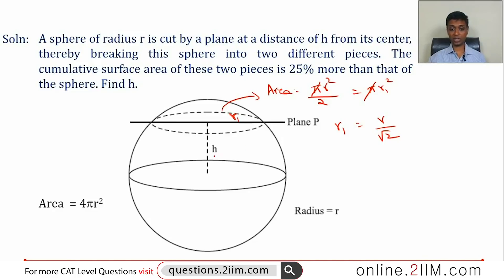This is simple. This is a 90 degree line, this is the radius, so h² plus r₁² equals r². Or h² plus r² by 2 equals r².